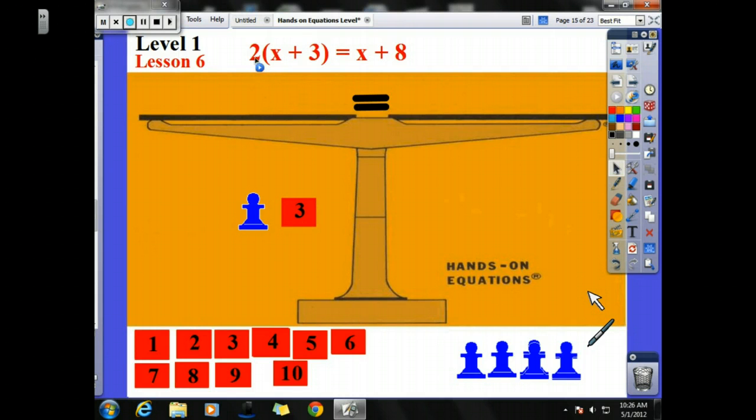But I need to have two sets of x plus 3, two times x plus 3. I need to see x plus 3 twice. So there is another x plus 3, and I put all of that up on my board.